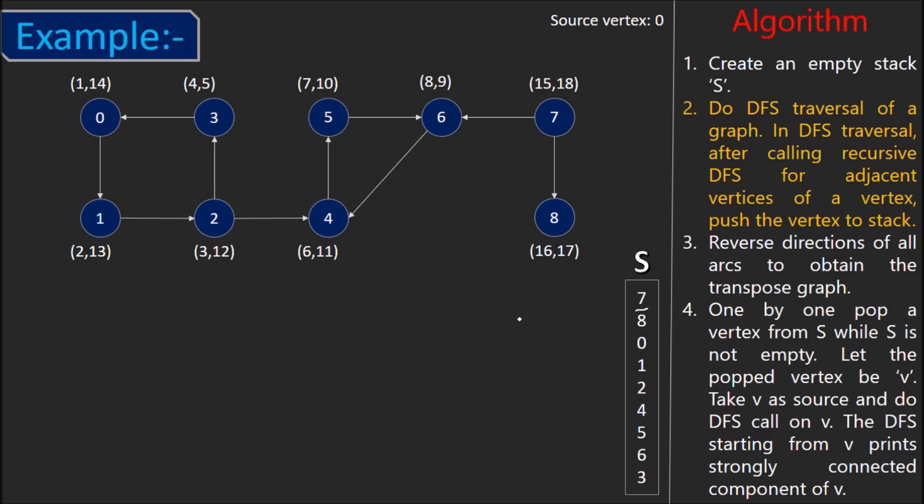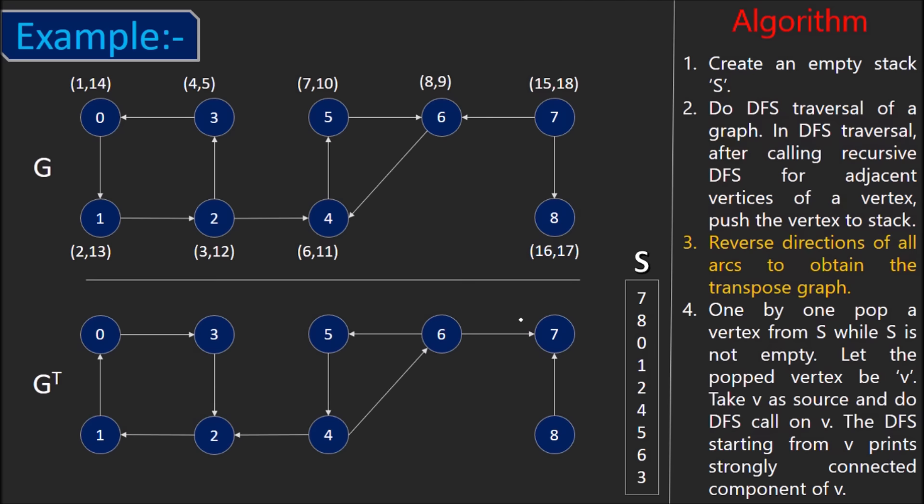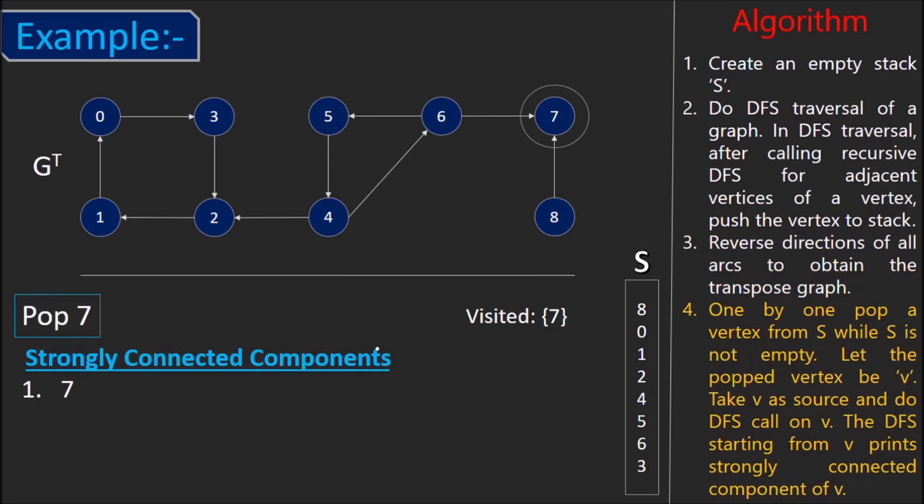Next step is finding the transpose of the given graph. Simply reverse all the edges. Let's pop the top element of stack, that is vertex 7. Call DFS on it. Note that we cannot visit any other vertex from 7 in G transpose. Hence, 7 is alone in an SCC.